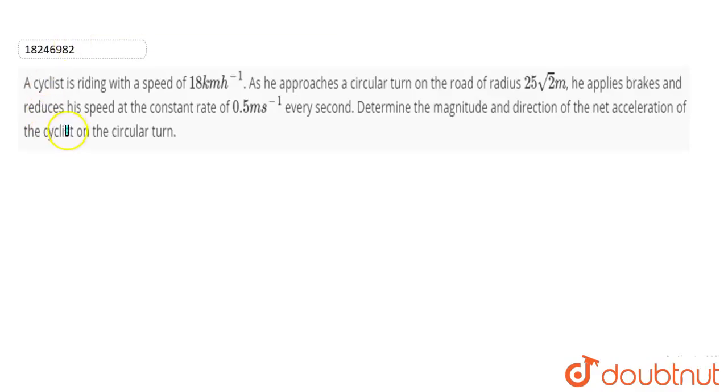In this question, the cyclist is riding with a speed of 18 km per hour. As he approaches a circular turn on the road of radius 25√2 meter, he applies brakes and reduces his speed at the constant rate of 0.5 meter per second every second. Determine the magnitude and direction of the net acceleration of the cyclist on the circular turn.